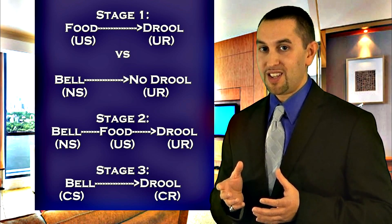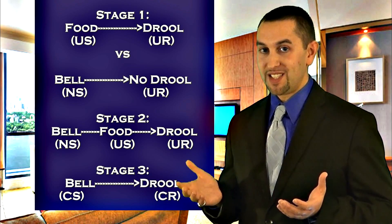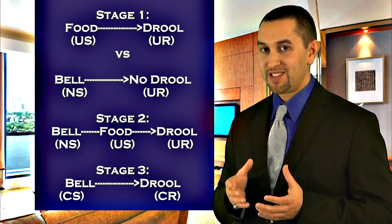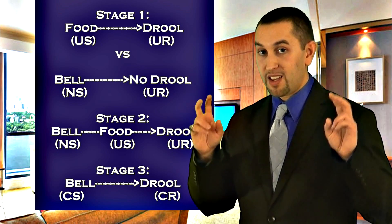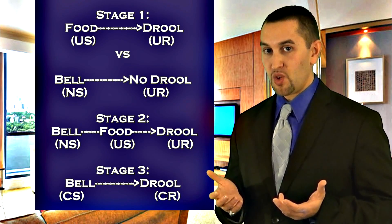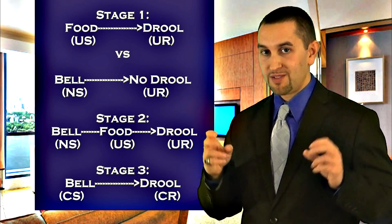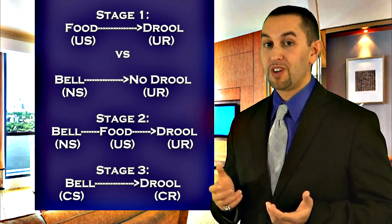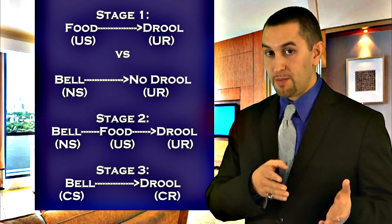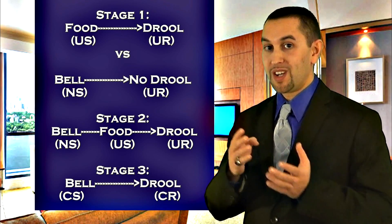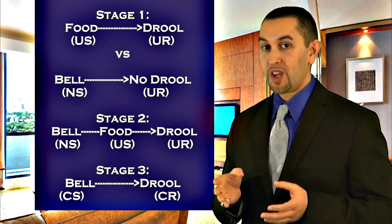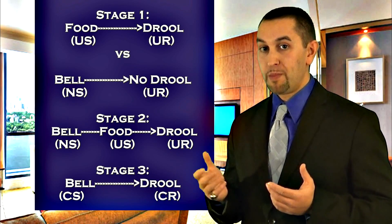In stage three, the conditioning is complete. The dogs drool in response to the bell. Now the bell is called a conditioned stimulus, and the drooling is called a conditioned response. So two things happened here: the bell went from being a neutral stimulus to a conditioned stimulus, and the dogs are showing a new conditioned response to the bell.